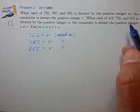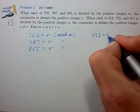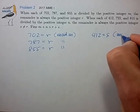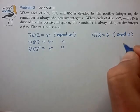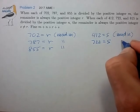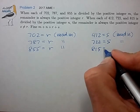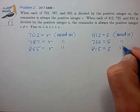And these other three, we have a similar statement that 412 is equal to s in mod n. And 722 is also equal to s mod n. And 815 is equal to s in mod n.